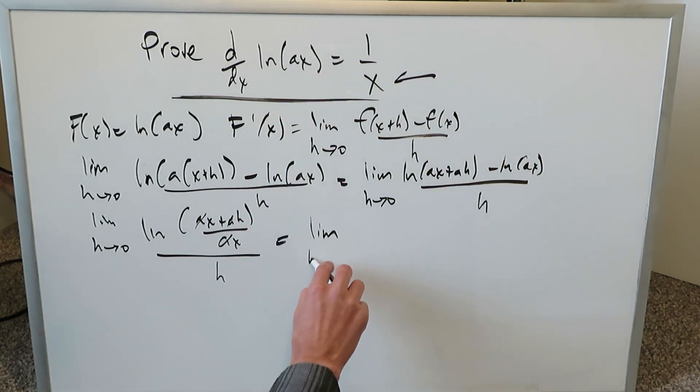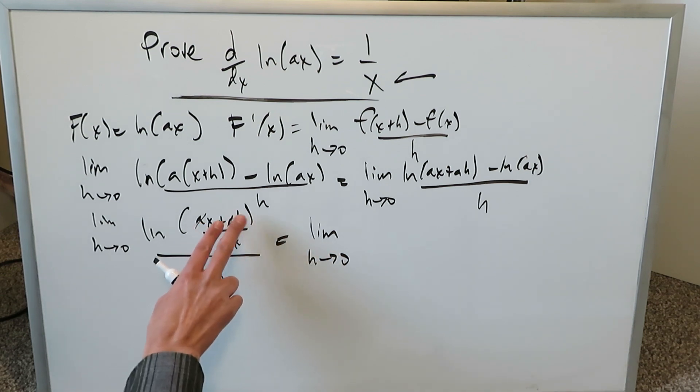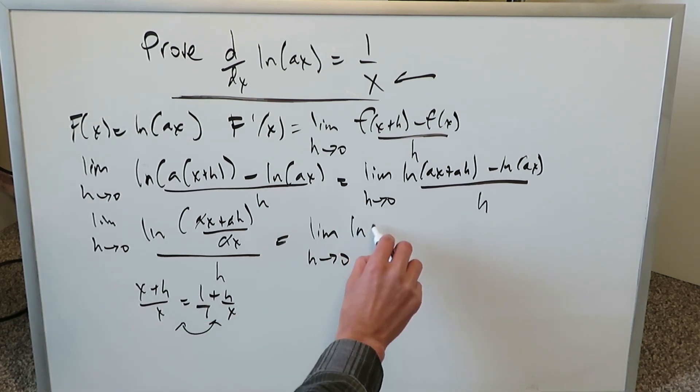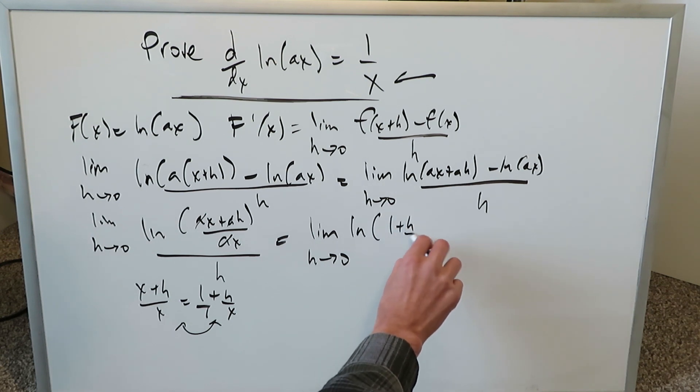Now we just have to carry this through. Limit as h approaches 0. When you're looking over here in just this part, we're really having (x plus h) over x which you can simplify as 1 plus h over x. Think about it. Common denominators, right? This thing is equal to that. I want to bring this into the picture. I'm really looking at natural log(1 plus h over x) all over h.